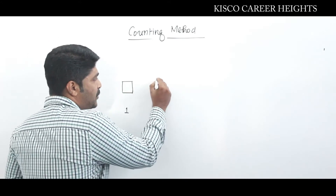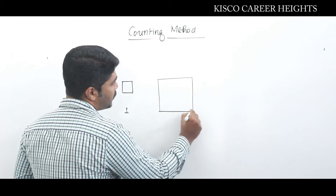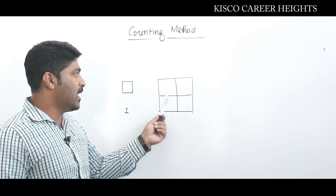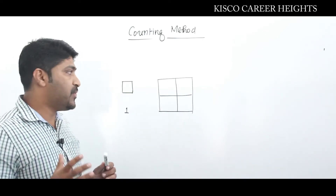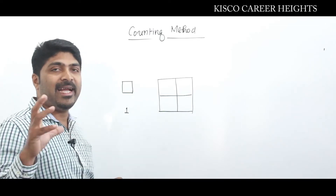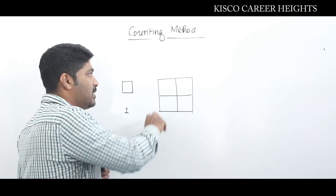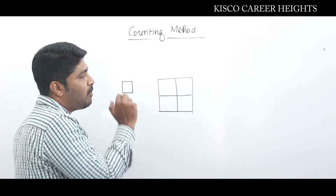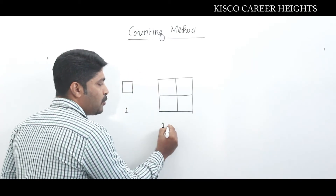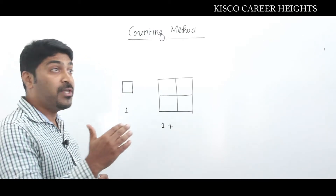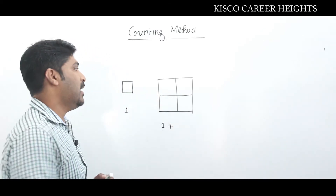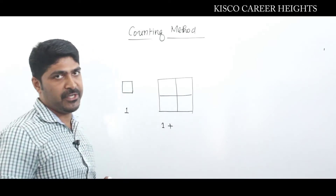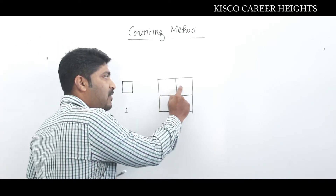Next we consider a two-by-two grid. Here we can identify two different dimensions. The entire big square has dimension two-by-two — there is exactly one such two-by-two square. Then looking at the small identical one-by-one squares, by observation we can count there are exactly four one-by-one squares.